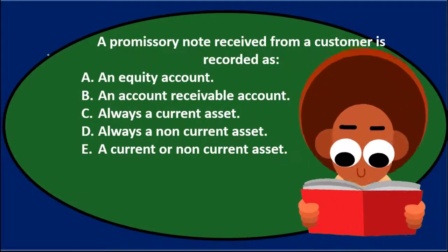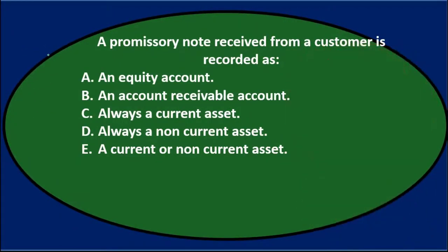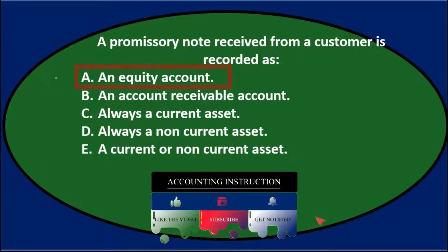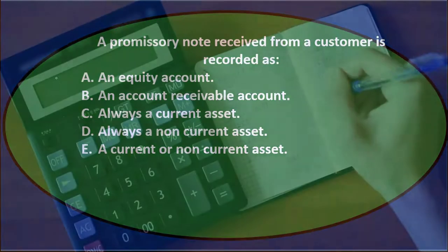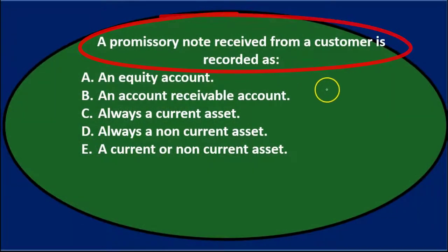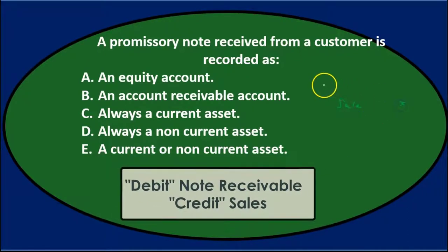Read through it one more time and go through the process of elimination. The question is: a promissory note received from a customer is recorded as an equity account? A promissory note — it might help to think of the journal entry related to that. If we received a promissory note, typically we might have a sale that we made, we credit sales, and then the debit might be the note receivable rather than accounts receivable.